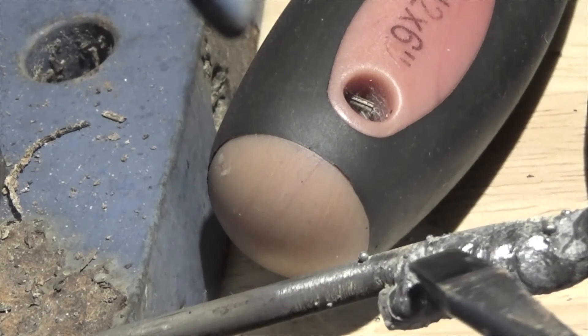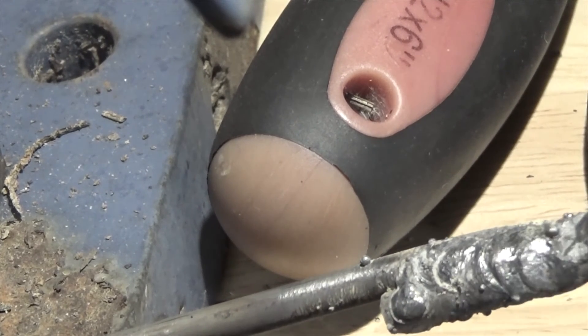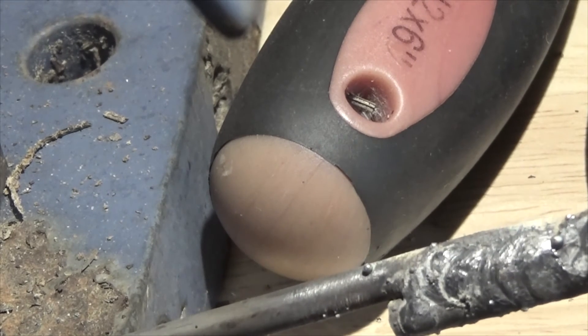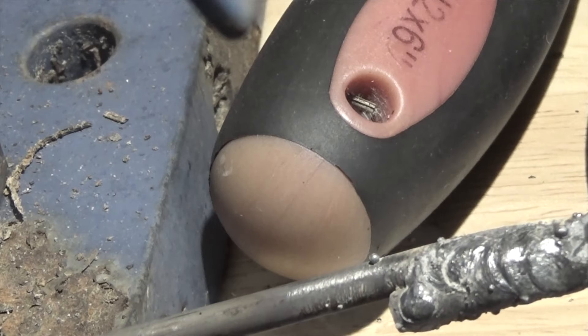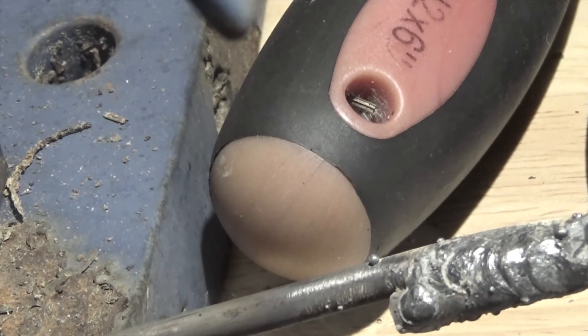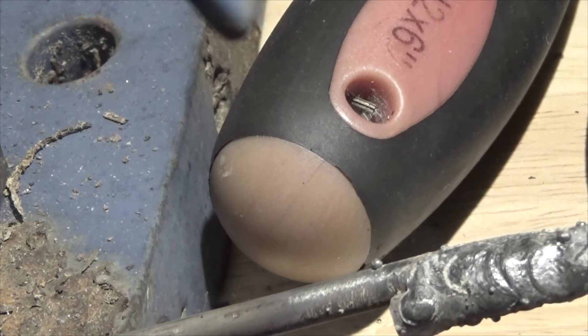And then I started welding this direction right here. Look at that weld. Look at that bead. Look at how incredible that is. And that's with that 120 welder. I believe this is 1 1/8 inch stock. I tore the label off and threw it away.